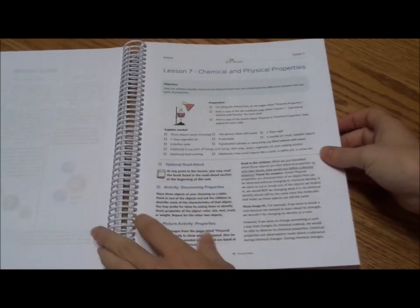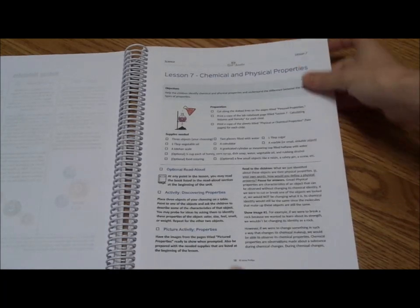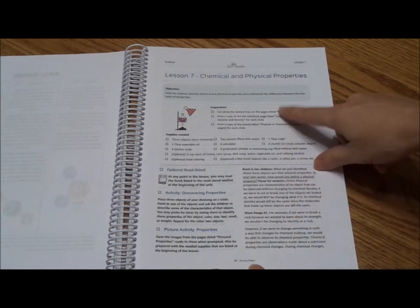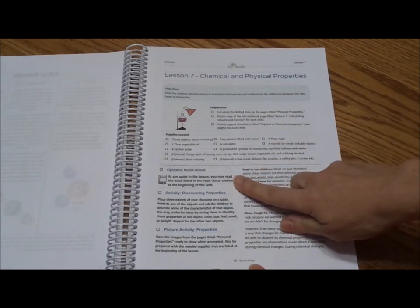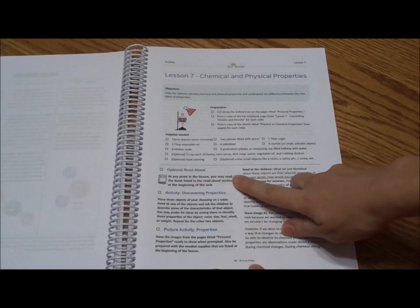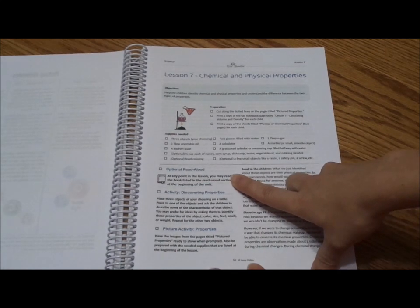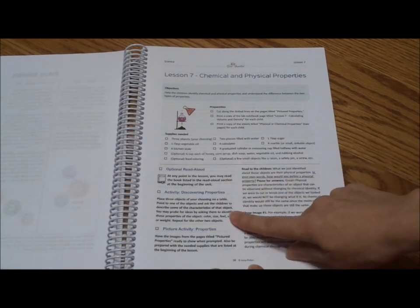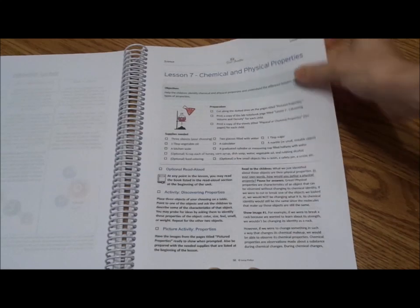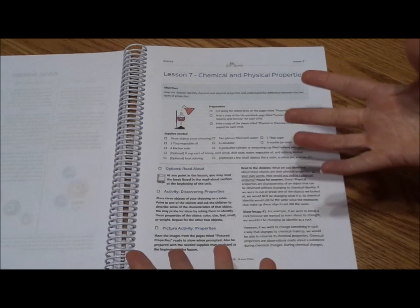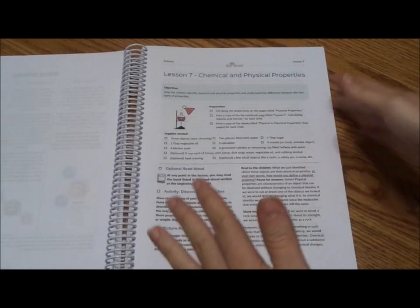So what's this one? Lesson seven, chemical and physical properties. It tells me everything that we're going to need to do our lab and what I need to do ahead of time. There's an optional read aloud. I like to do the read aloud with my kids because they're not going to stay little forever and they're already 12 and 15 so anytime that I can get snuggling to read with them is a good time. We talk about discovering properties through an activity. There's a lot of Socratic method in these sciences.